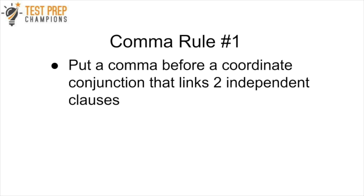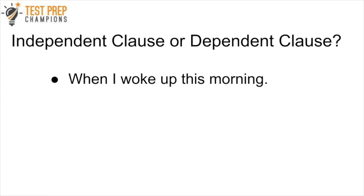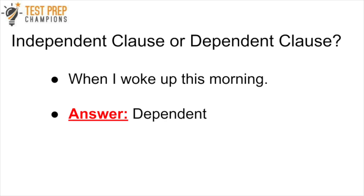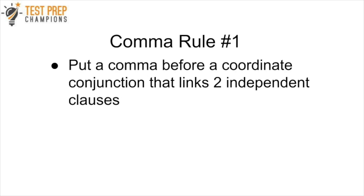Back to comma rule number one: put a comma before a coordinate conjunction that links two independent clauses. An independent clause has both a subject and a predicate and can stand as a sentence, whereas a dependent clause has both but can't stand as a sentence. For example, 'When I woke up this morning' is a dependent clause — it's an incomplete thought, while an independent clause has a complete thought.